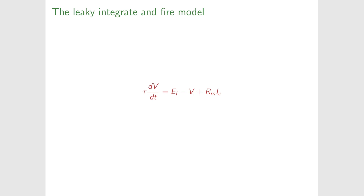The leaky integrate-and-fire model is still used in network models where you have neurons interacting. If what you're interested in is the behavior emerging from the network, the leaky integrate-and-fire model is often an accurate enough model of neuronal dynamics, coupled with a model of the synapses. So it's still an important part of models used by computational neuroscientists and provides insight into what neurons do.